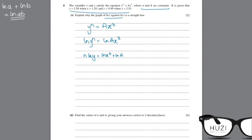So, ln x cube becomes ln x cube plus ln a. Then finally, again, n ln y, the power law will make this 3 ln x plus ln a.